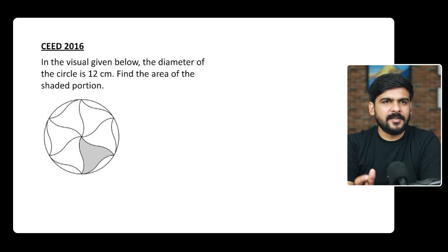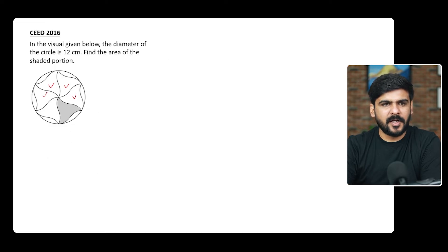This is the first question we are taking today. This came in CEED 2016. As you can see in this question, this figure is a circle and there are six similar smaller figures. If we try to visualize this, it's looking a little bit like a hexagon inside a circle, but it is not exactly a hexagon.